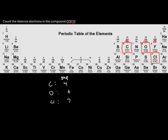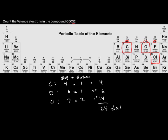Then we'll multiply each group number by how many of each atom there are. There is one carbon, one oxygen, and two chlorines. We'll multiply across: 4 times 1 for carbon gives 4, 6 times 1 for oxygen gives 6, and 7 times 2 for chlorine gives 14. Then we add all of our answers together: 4 plus 6 plus 14 for a total of 24 electrons available to build the structure with.